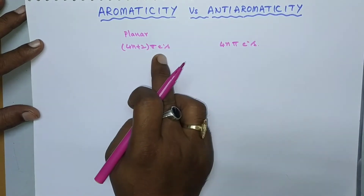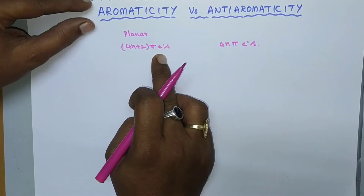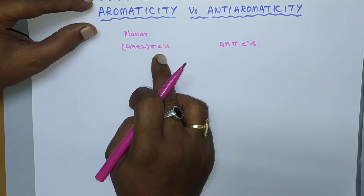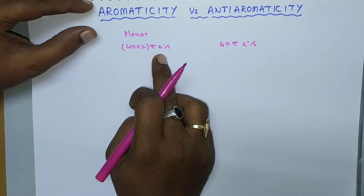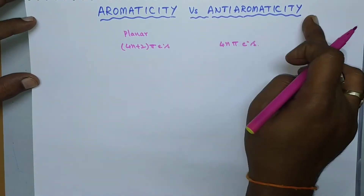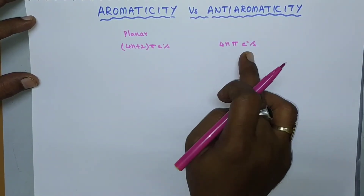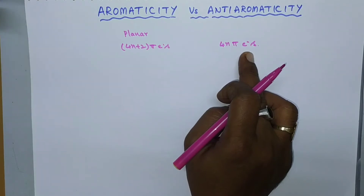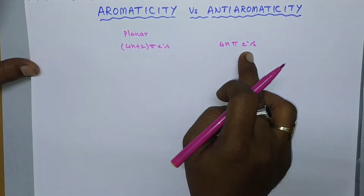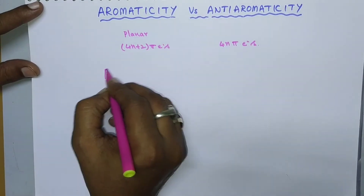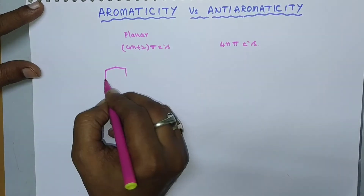Due to the presence and delocalization of 4n+2 π electrons, the aromatic molecule exhibits greater stability and involves in resonance. Whereas the anti-aromatic compound also involves in delocalization, but the molecule is generally unstable.